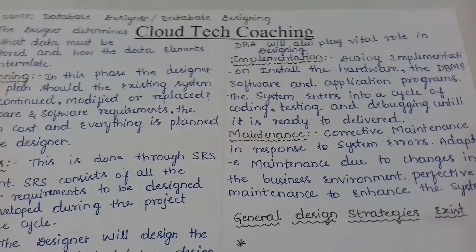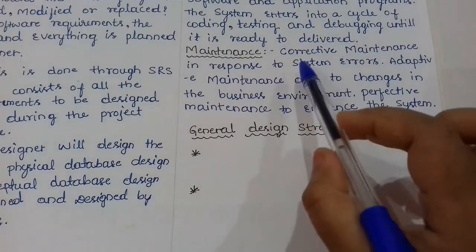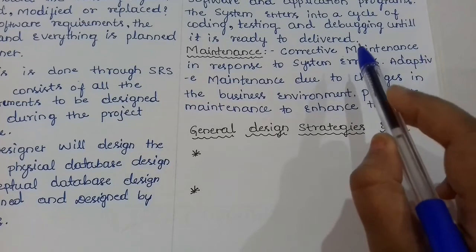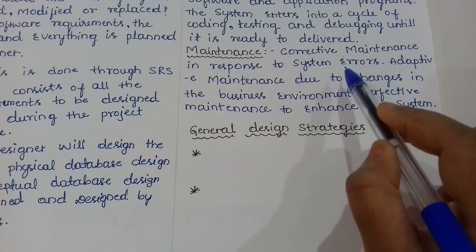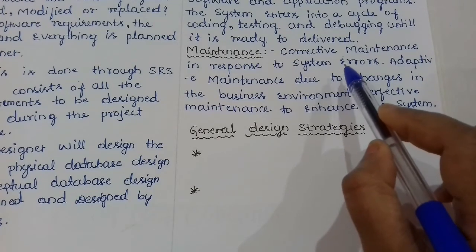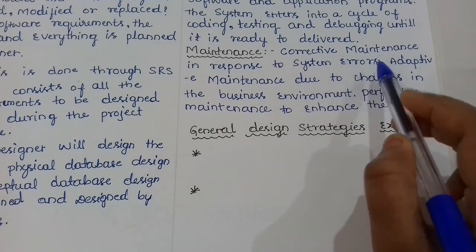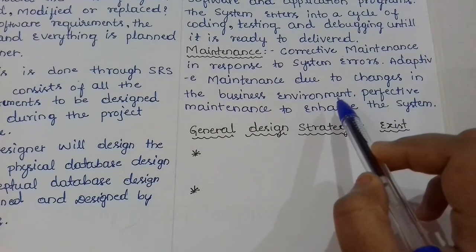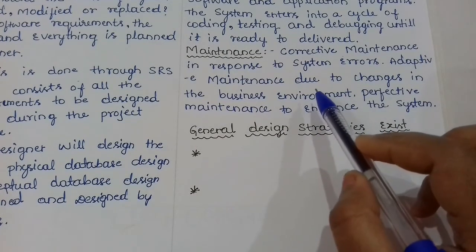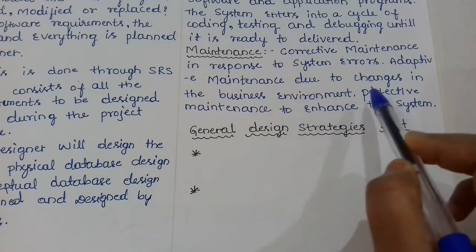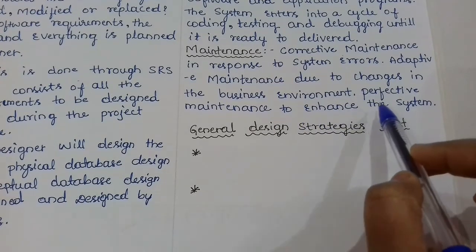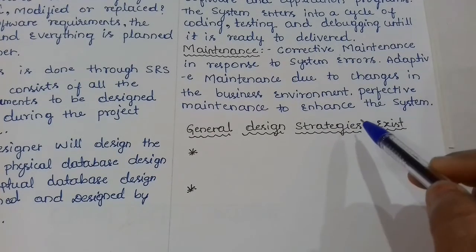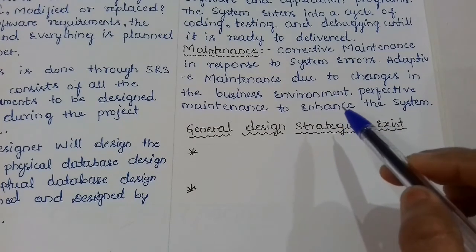Next comes the maintenance phase. Corrective maintenance addresses system errors found after implementation. Adaptive maintenance handles changes in the business environment — for example, if the business adopts a new product, the database must be updated. Perfective maintenance involves updating to new versions to enhance the system.